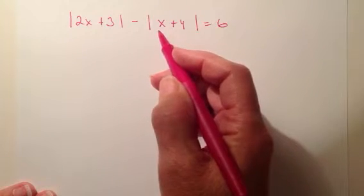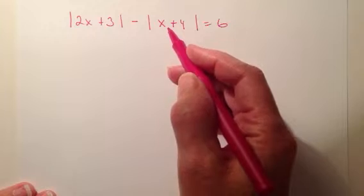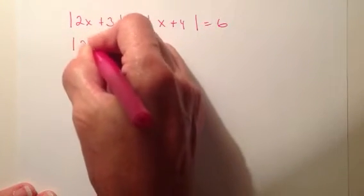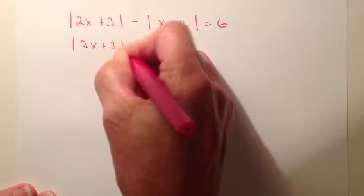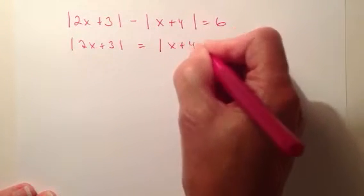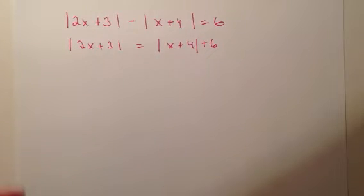So Adam, you were asking about two absolute values. This is the one that confuses you the most. So if I have two absolute values, what I want to do is I want to put them on opposite sides of the equation. So I'm going to get 2x plus 3 equals absolute value of x plus 4 plus 6. So all I did was add that absolute value of x plus 4 over to the other side.